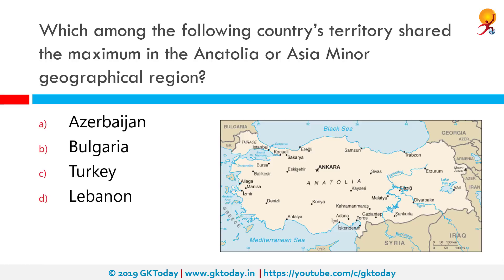Which among the following countries has the largest share of the Anatolia or Asia Minor geographical region? Correct answer is Turkey.